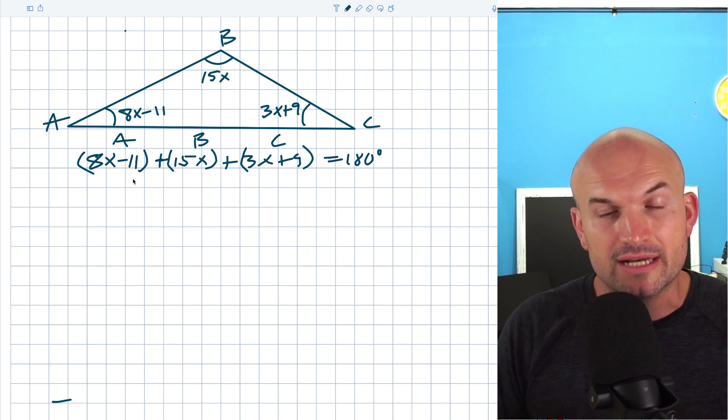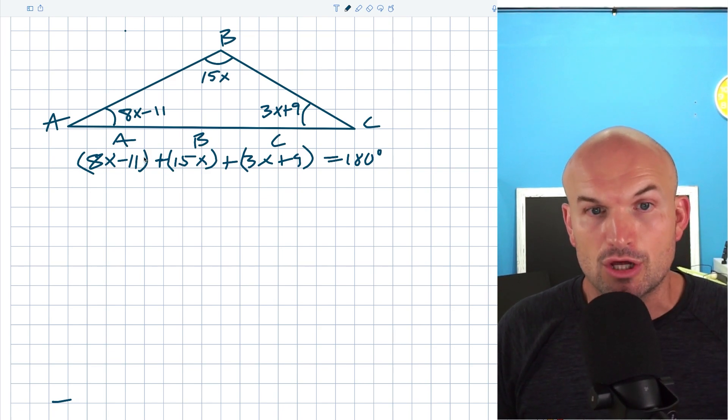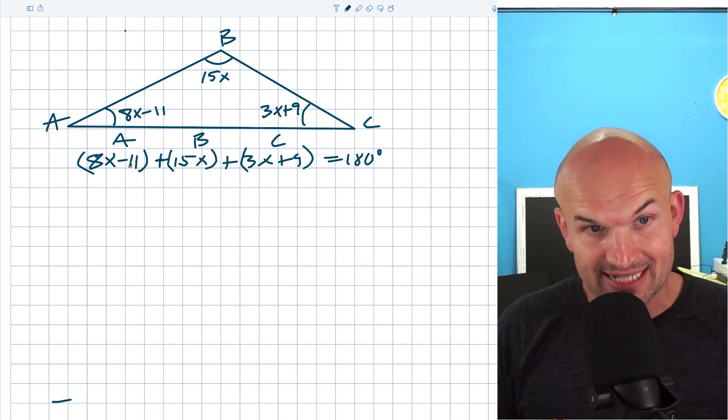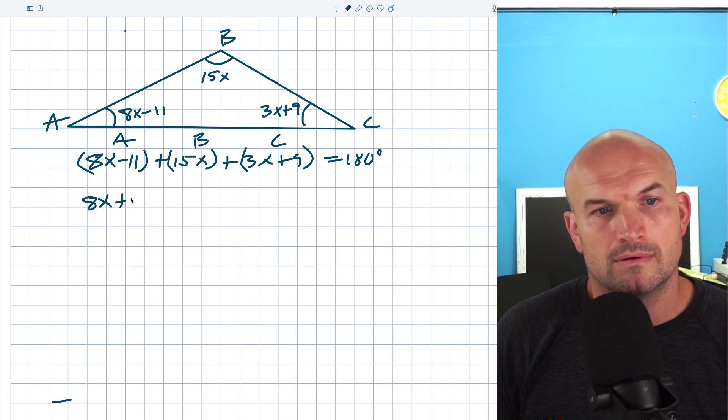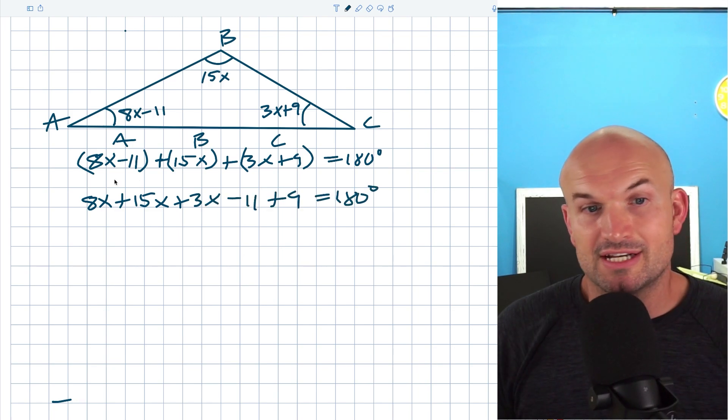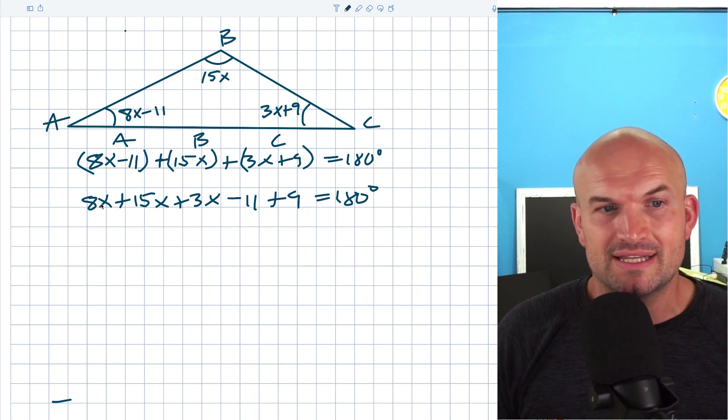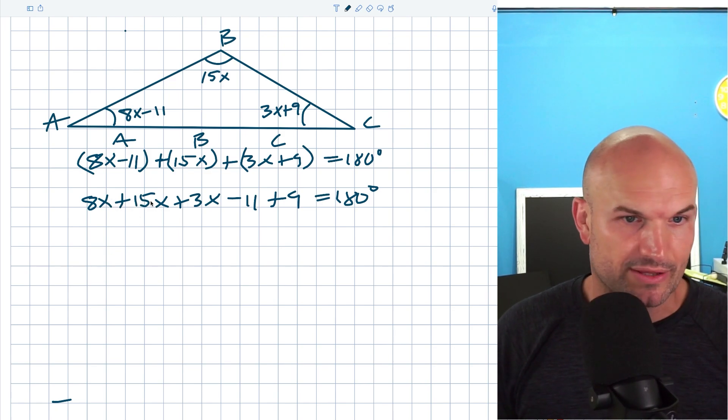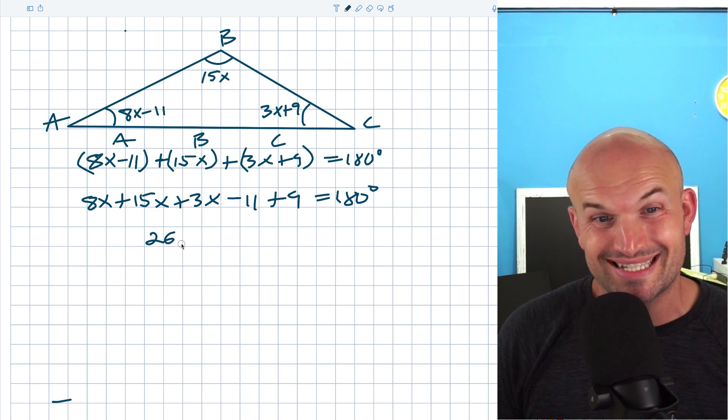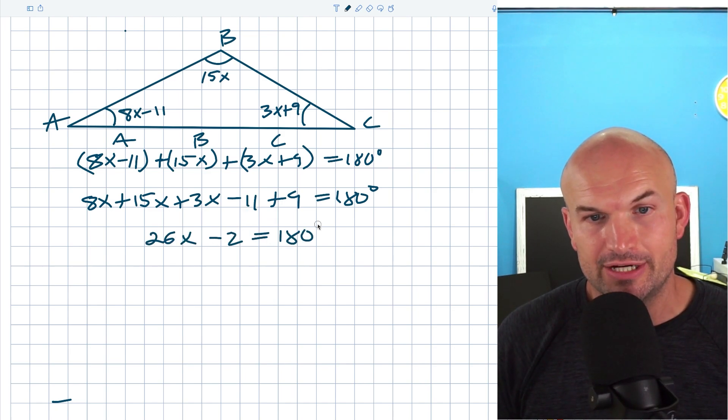What we can do now, I can just rearrange these. I'll put the variables with the variables and the numbers with the numbers. Just make sure you carry along the signs. Notice this is a positive 9 and that's a negative 11. So now I just kind of rearranged everything, it just makes life a little bit easier. Now I can combine this. So 8X plus 15X is 23X plus 3X is going to be 26X. Negative 11 plus 9 is going to be minus 2 equals 180 degrees.